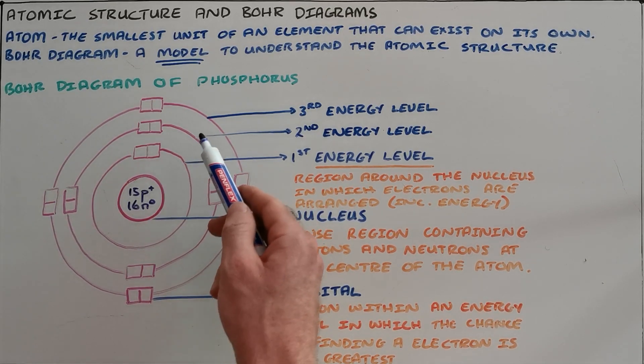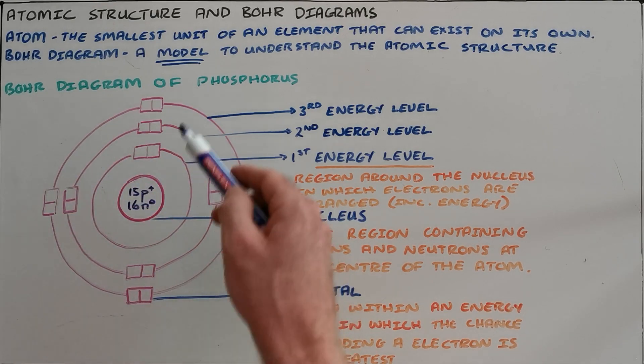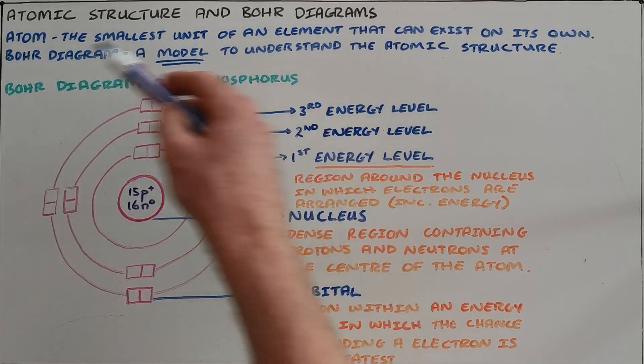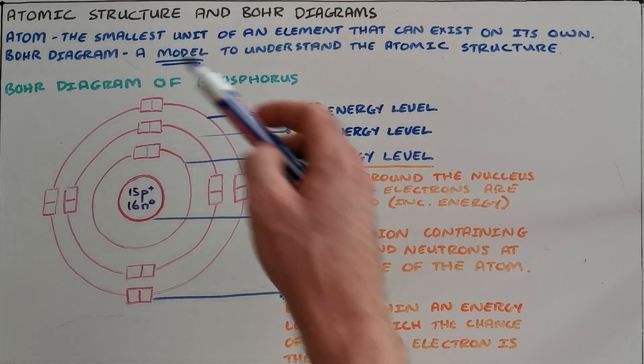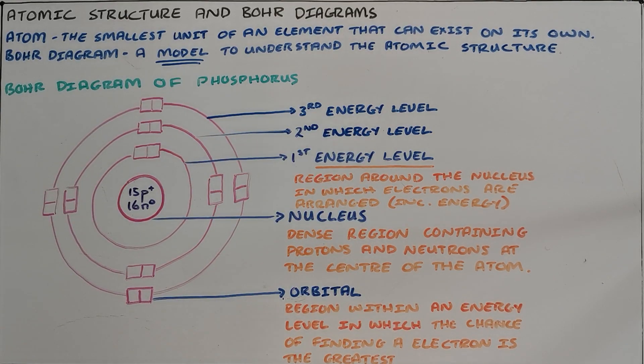The second energy level then has a slightly higher energy and the third energy level. There are up to eight possible energy levels that we can find, each with more energy than the previous.